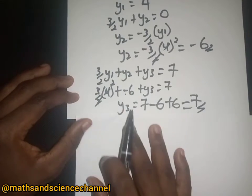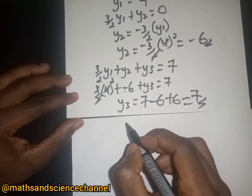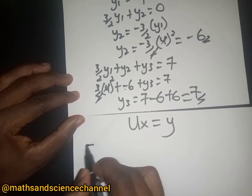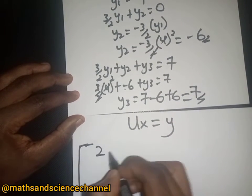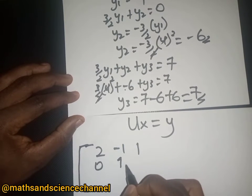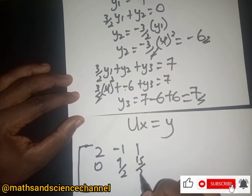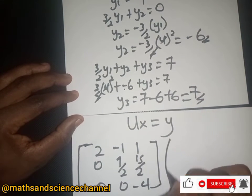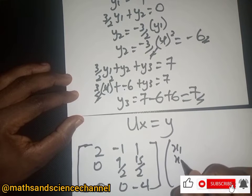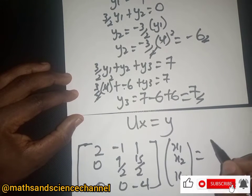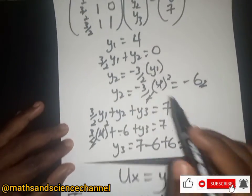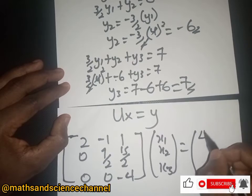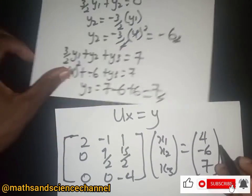Since we have the values Y1 equals 4, Y2 equals negative 6, Y3 equals 7, the last step is UX equal to Y, where U is the upper triangular matrix 2, -1, 1; 0, 9/2, 15/2; 0, 0, -4 and the right-hand side is 4, -6, 7.